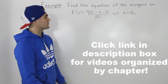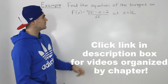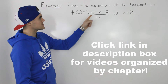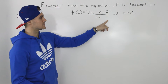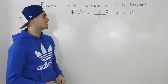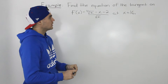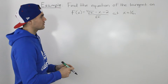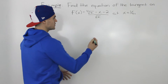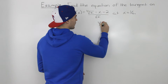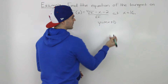Moving on to the next example, we have to find the equation of the tangent on the function the fourth root of x minus x minus 2, all over the square root of x, at an x value of 16. We know that a tangent is a line, so the equation of a line is going to be in y equals mx plus b format.